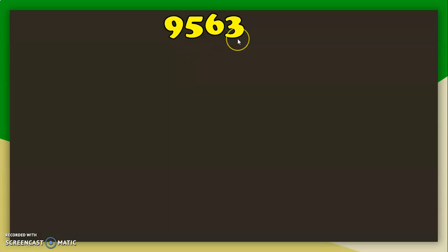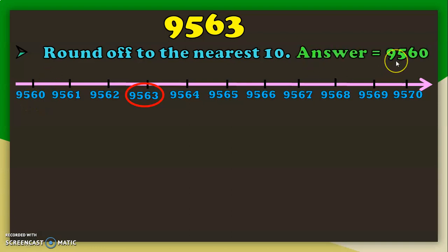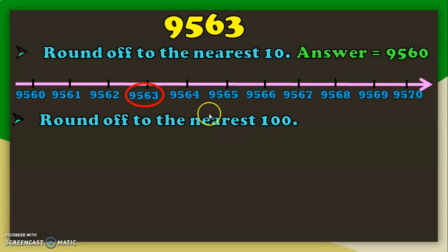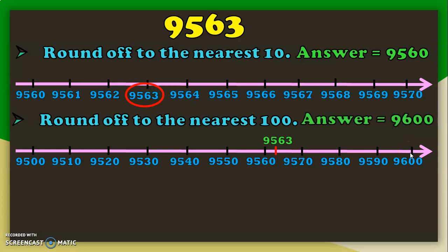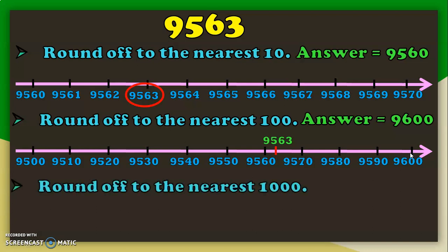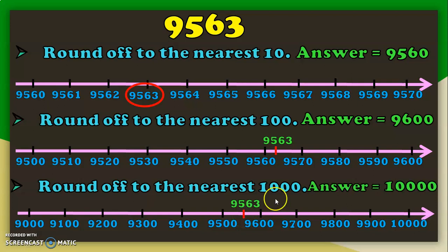Next, we are going to do an interesting activity by rounding the 4-digit number 9563 to the nearest 10, 100, and 1000 using the number line method. Rounding to the nearest 10: 9563 lies between 9560 and 9570 and is closer to the lower limit, so the answer is 9560. Rounding to the nearest 100: 9563 lies between 9500 and 9600 and is closer to 9600, so the answer is 9600. Rounding to the nearest 1000: 9563 lies between 9000 and 10000 and is above the midway, so it rounds up to 10000.